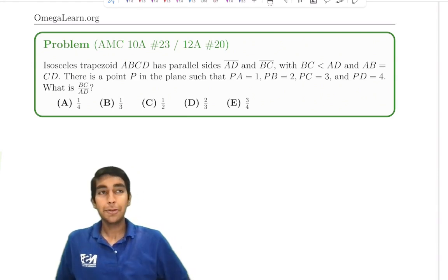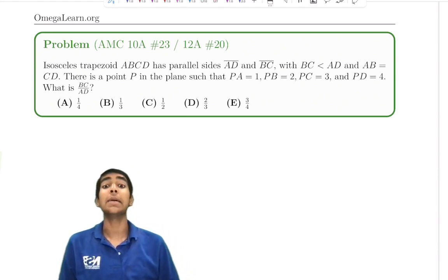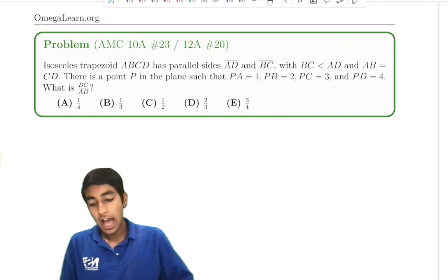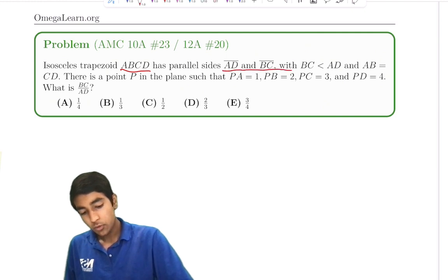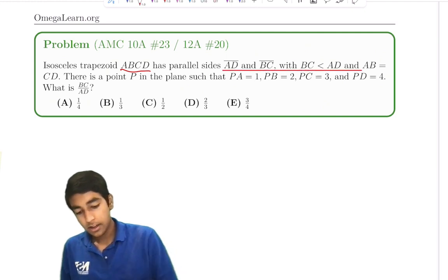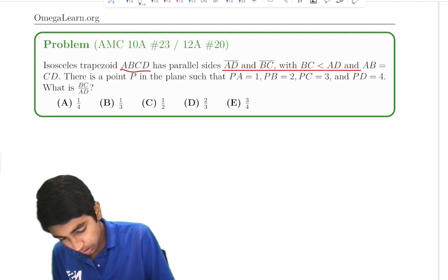Let's now solve this cool trapezoid problem from the 2022 AMC 10 and 12A. Isosceles trapezoid ABCD has parallel sides AD and BC, with BC less than AD.